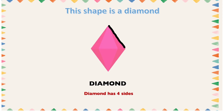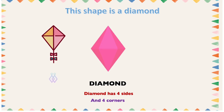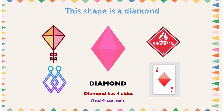This shape is a diamond. A diamond has four sides: one, two, three, four. It also has four corners: one, two, three, four. We can find some objects with a diamond shape — objects such as a kite, earrings, a sign, and a play card. All these objects have a diamond shape.